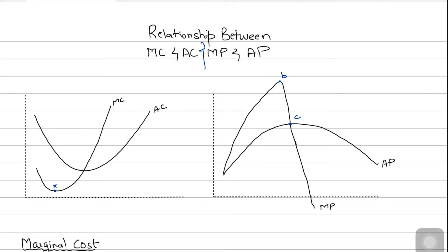In this video we're going to be discussing the relationship between marginal cost and average cost, and we'll also correspond this with the relationship between marginal product and average product. Basically, the shapes of the marginal cost and average cost curves are directly corresponding with the shapes of the marginal product and average product curves.